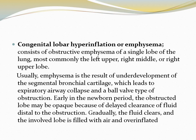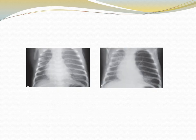Congenital lobar hyperinflation or emphysema consists of obstructive emphysema of a single lobe of the lung, most commonly the left upper, right middle, or right upper lobe. Usually emphysema is the result of underdevelopment of the segmental bronchial cartilage, which leads to expiratory airway collapse and ball-valve type of obstruction. Early in the newborn period, the obstructed lobe may be opaque because of delayed clearance of fluid due to the obstruction. Gradually the fluid clears and the involved lobe fills with air and becomes overinflated and emphysematous.